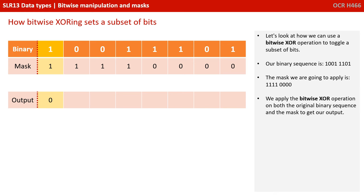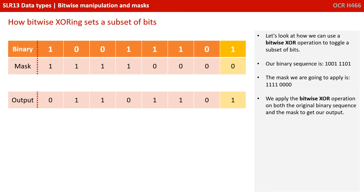With regular OR, 1 OR 1 outputs 1. But with exclusive OR, if both inputs are 1, the output is 0 — it's only if one or the other is 1, not both. So: 1 XOR 1 is 0; 0 XOR 1 is 1; 0 XOR 1 is 1; 1 XOR 1 is 0; 1 XOR 0 is 1; 1 XOR 0 is 1; 0 XOR 0 is 0; 1 XOR 0 is 1.